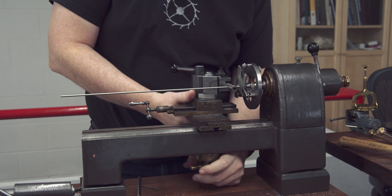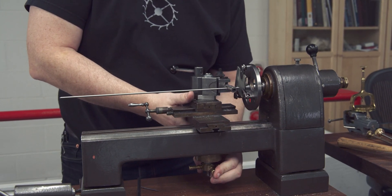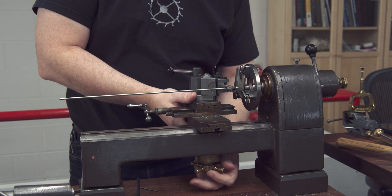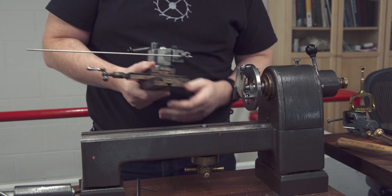Once we've centered the plate around the hole that we want to drill, we can install the tailstock and install the appropriate drill bit.